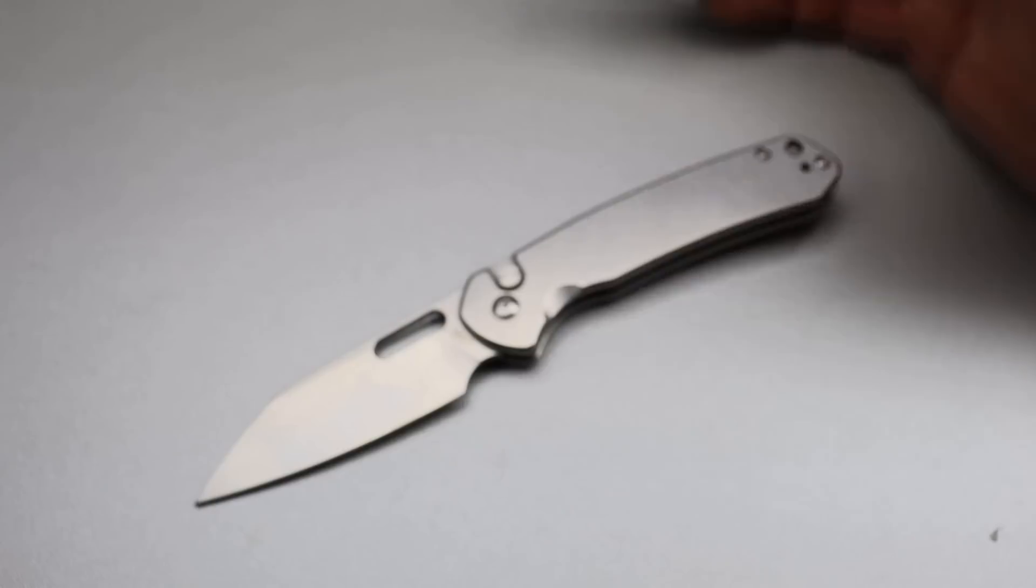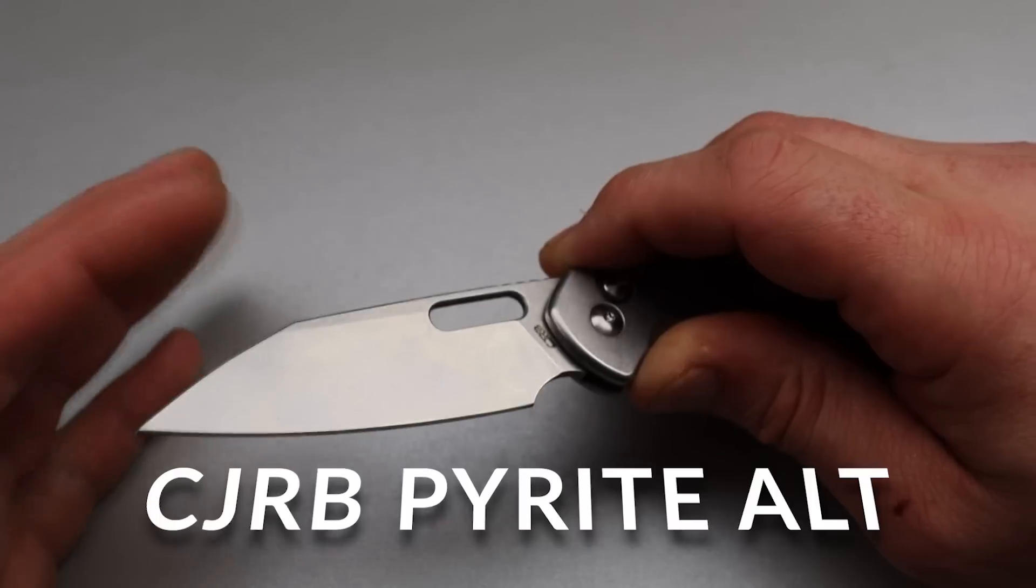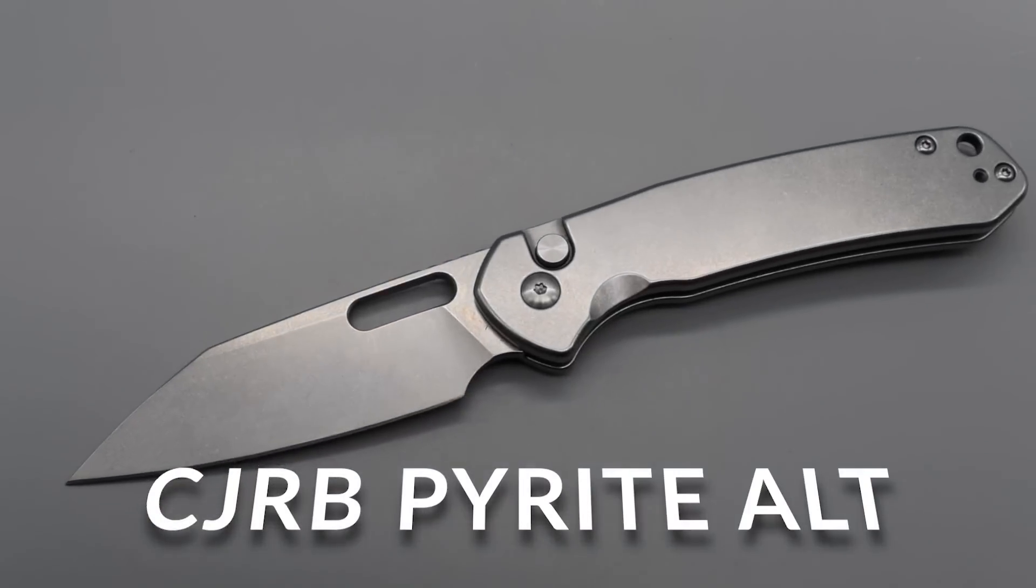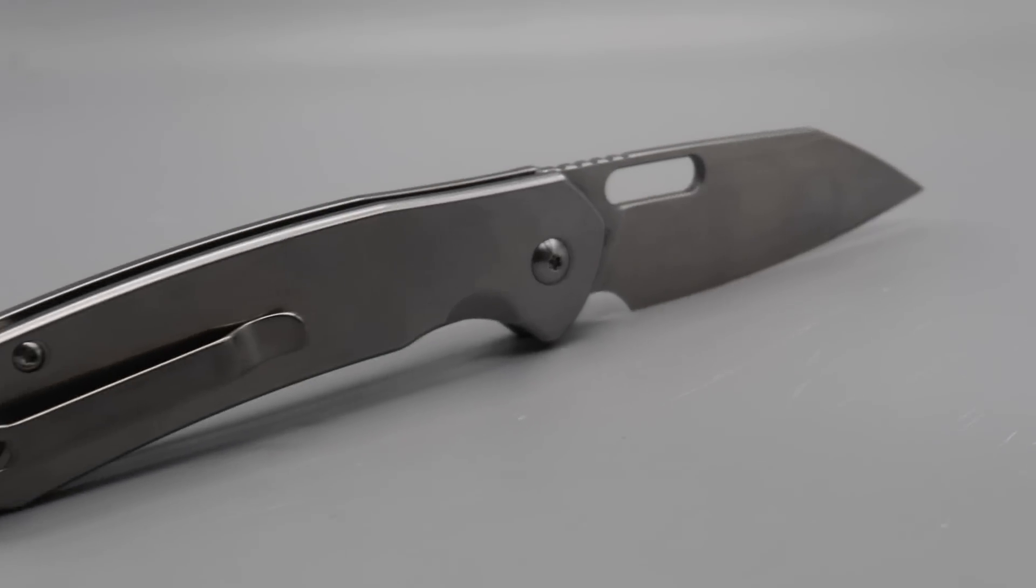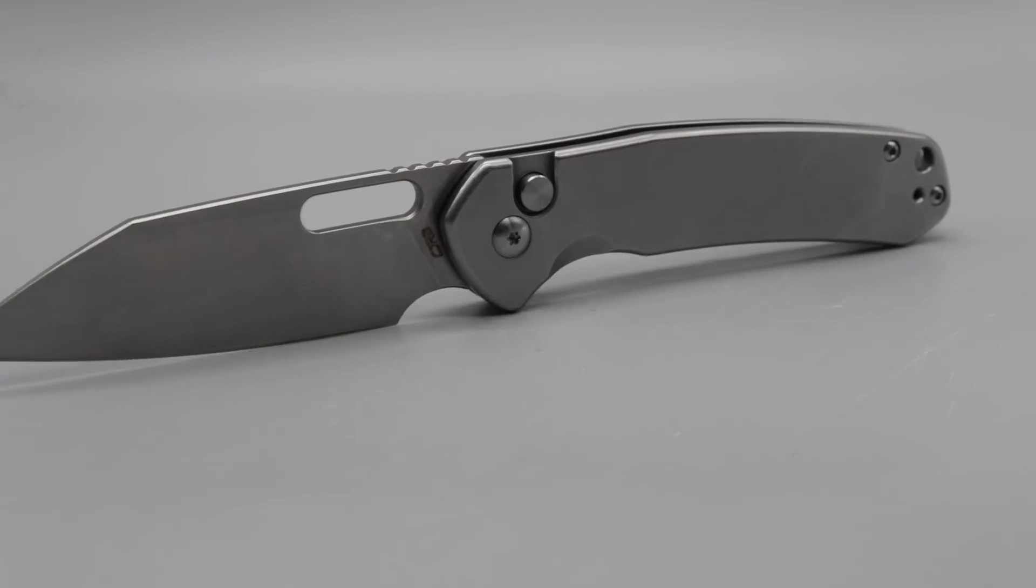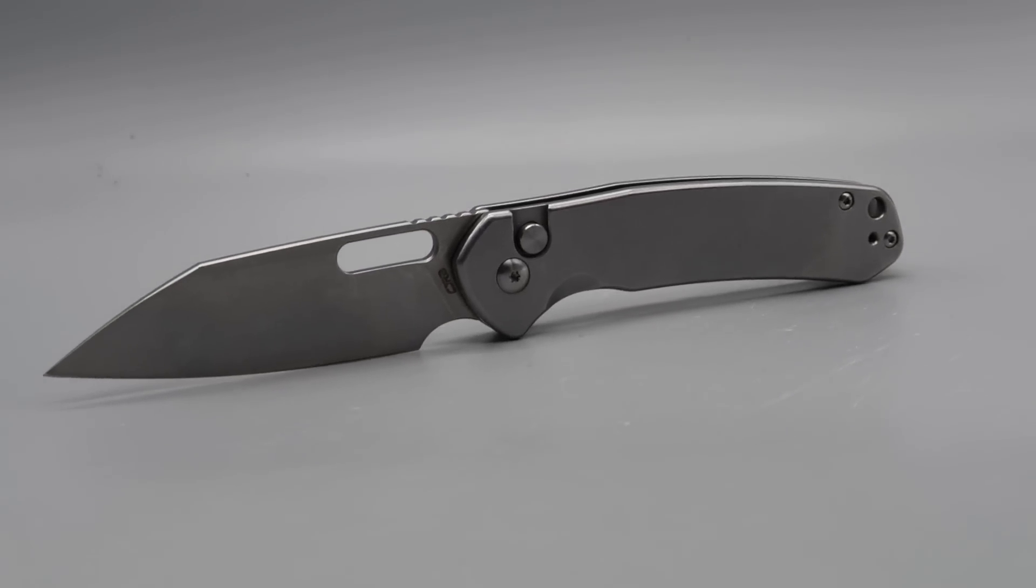Now we actually have a couple of CJRBs on this list. So we have the CJRB Pyrite with the sheep's foot and hole blade. Again, AR-RPM9 steel, fantastic steel, takes a really good edge, holds a pretty good edge, and it's easy to sharpen.